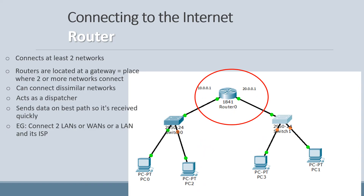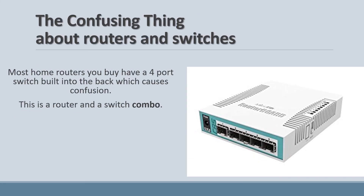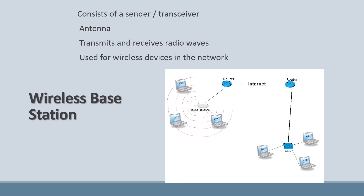You can connect two LANs, two WANs, or a LAN and its ISP using a router. It can be confusing to know whether a box in your network is a router or a switch — the truth is you've probably got a router and switch combo. Most home routers have a four-port switch built into the back, which causes confusion; it's actually a router-switch combination. A wireless base station allows you to connect over Wi-Fi. It consists of a sender and transceiver, has an antenna, and transmits and receives radio waves for wireless devices in your network.